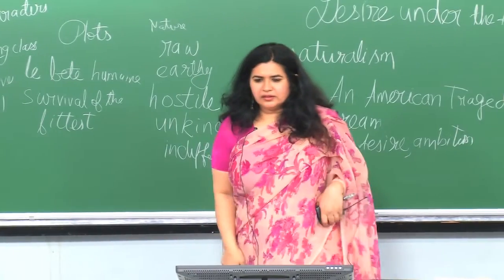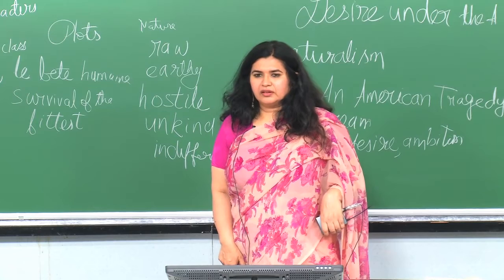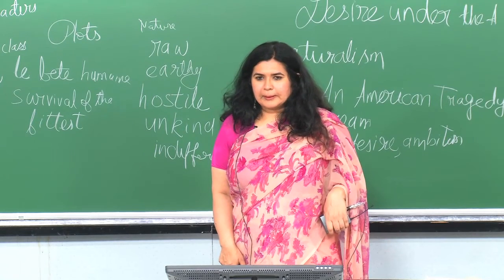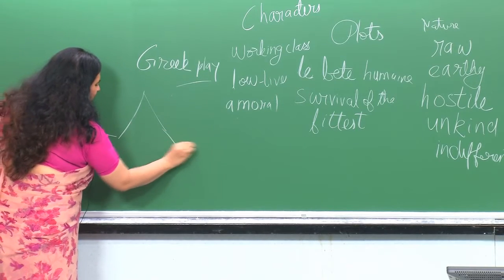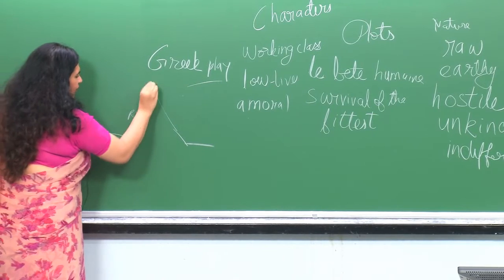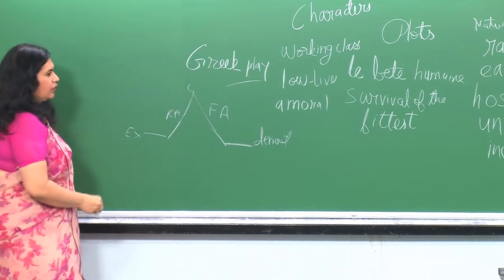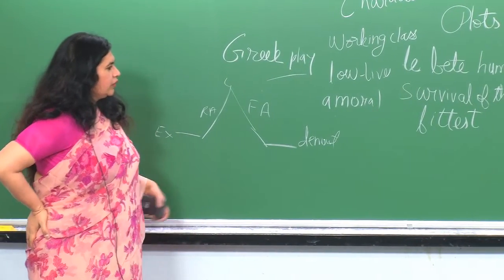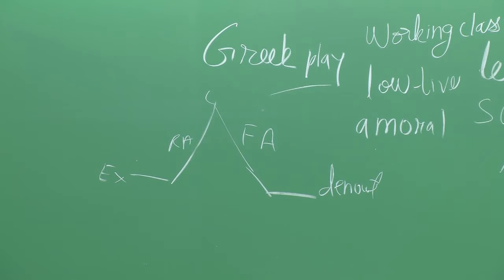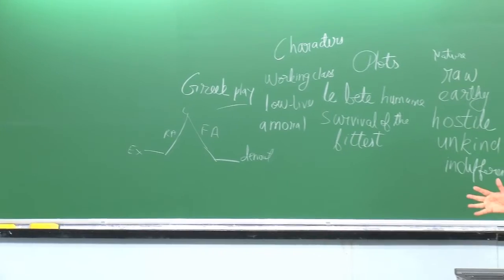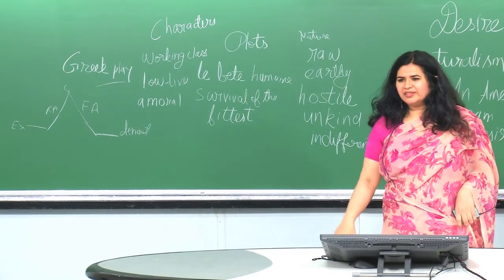Going back to Oedipus — the general construction of a Greek play involves the Freytag triangle: exposition, rising action, climax, falling action, and denouement. There is also a choric character. When we talked about A View from the Bridge and compared it to Greek plays like Oedipus, these structural elements were present.